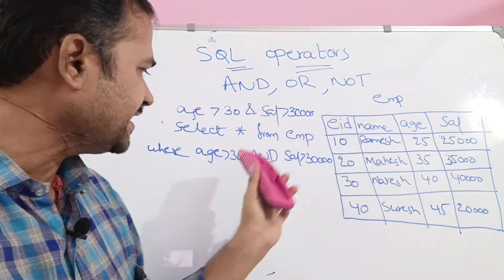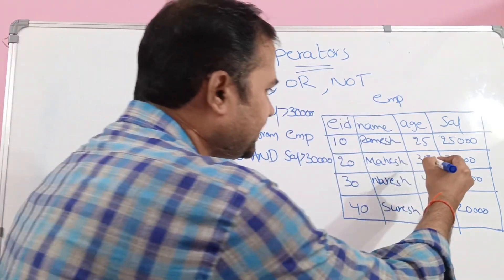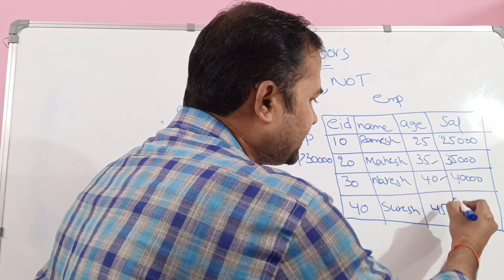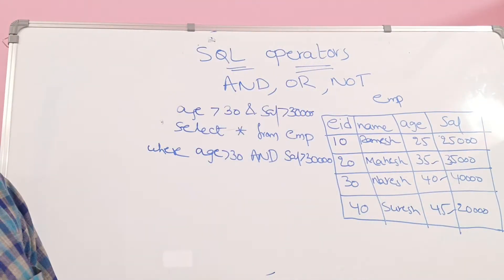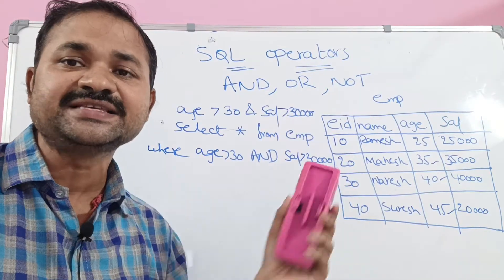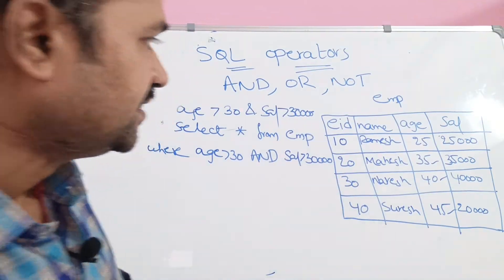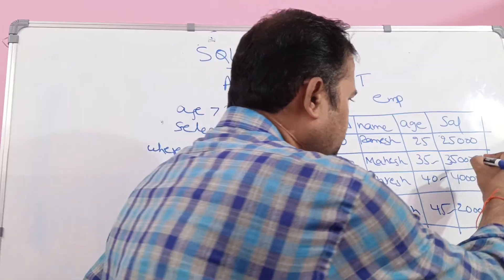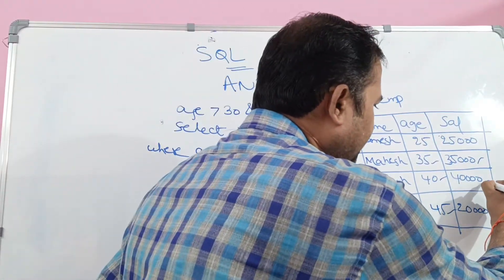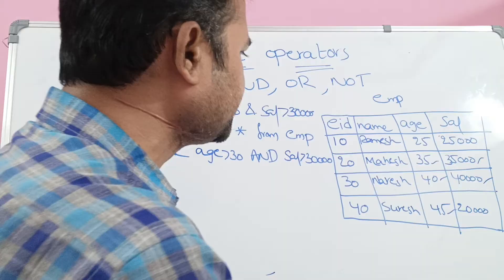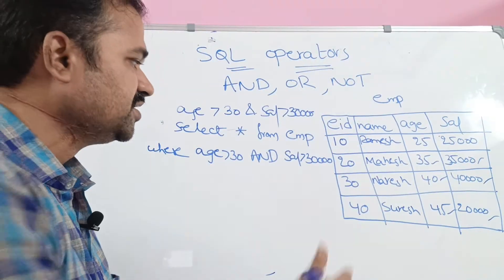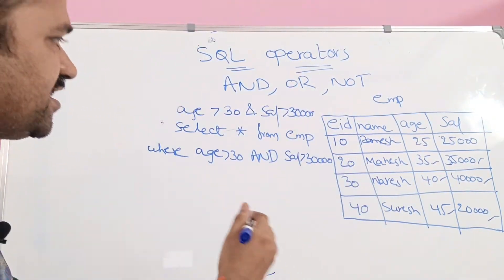Here, Age is greater than 30 for the relevant records. The salary is also greater than 30,000 for some records. So it displays the last three records — wait, let us check each one carefully. Where both Age > 30 and Salary > 30,000 are satisfied, those records are displayed.